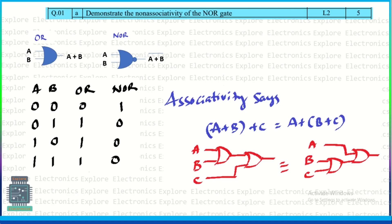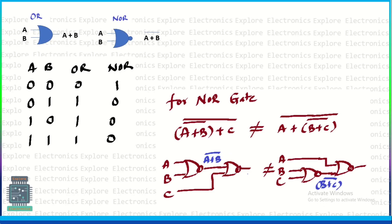For the OR gate, if you consider the associative property, associativity is satisfied — A plus B, the whole plus C equals A plus (B plus C) — and if you put any values in this diagram it will satisfy this. That's why we say associativity satisfies for the OR gate. But for the NOR gate, we need to evaluate (A+B)̄ + C whole bar versus A + (B+C)̄ whole bar, and these two are not equal. That's why associative property is not valid for the NOR gate.